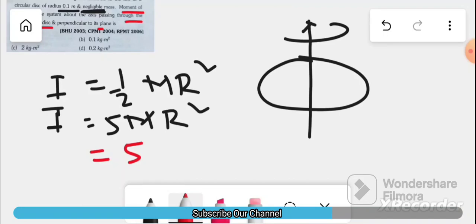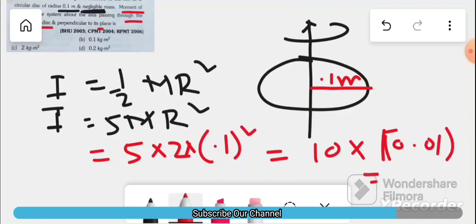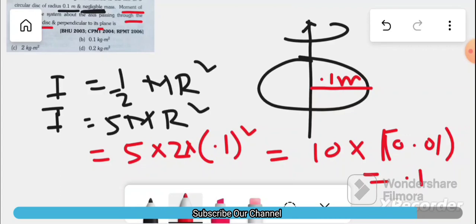5M is equal to 2 kg, the radius is 0.1 meter. Point 1 whole square equals 10 into 0.01, which equals 0.1 kg meter squared.